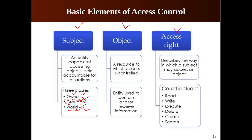Access rights can be of different types: read — a user may view information in a system resource; write — a user may add or modify something in a file; execute — a user may run specific programs; delete — a user may delete system resources such as files or records; create — a user may create new files, records, or fields; and search — a user may list files in a directory or search for specific information.